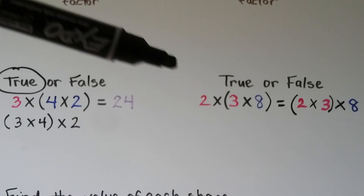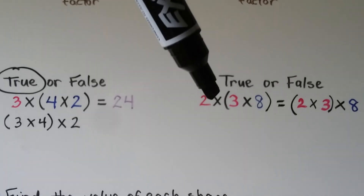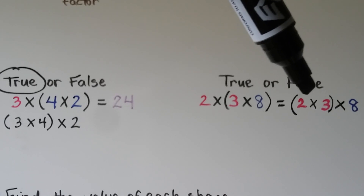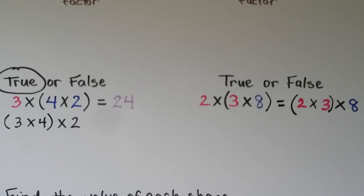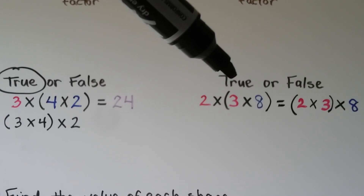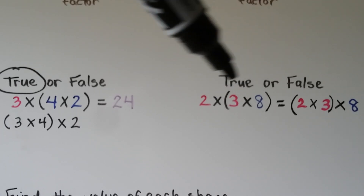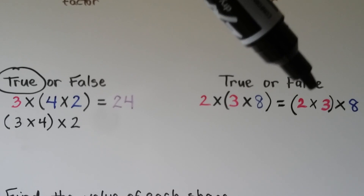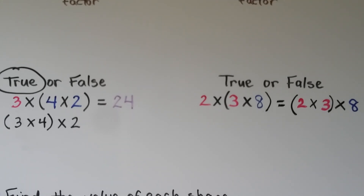Is this one true or false? It says 2 times (3 times 8) is equal to (2 times 3) times 8. The associative property lets us regroup them. So instead of the 3 times 8 being in parentheses, we now have the 2 times 3 in parentheses. Yes, this multiplication sentence is also true — the grouping was just changed.